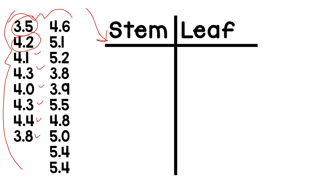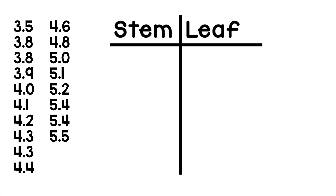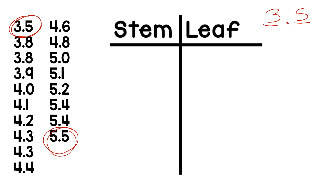These heights are not in order, so I want to put them in order to make it easier to place them on the stem and leaf plot. Here are my heights in order from least to greatest. Every number has two digits with a decimal in between, so for three and five tenths, the three will be my stem and the five will be my leaf.